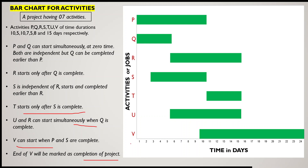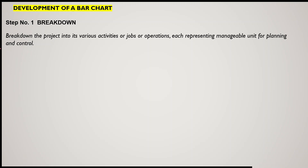Now, how to develop a bar chart — what things we need to keep in mind. Step one: break down the project into various activities, jobs, or operations, each representing a manageable unit for planning and control. As done in earlier lectures with the laundry wall installation project, you similarly break a project into smaller independent activities that can each be defined with a specific duration.